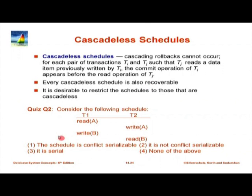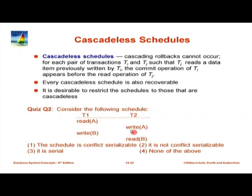A cascadeless schedule is one where cascading rollbacks cannot occur, and any cascadeless schedule is also recoverable. For example, consider a schedule with T1 doing read A and write B, and T2 doing write A and read B. Write A and write B access different items, so they can be swapped — making it conflict serializable and equivalent to the serial schedule T1 then T2.